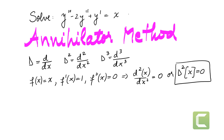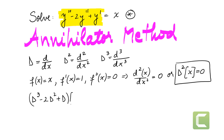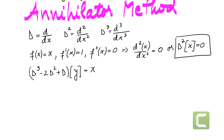Going back to our problem — call it equation star — let's rewrite the left-hand side using operators. This looks like D cubed minus 2D squared plus D, all applied to y, equals x. We can also factor this as D composed with (D minus 1) squared applied to y equals x, since factoring out D gives D squared minus 2D plus 1, which is (D minus 1) squared.